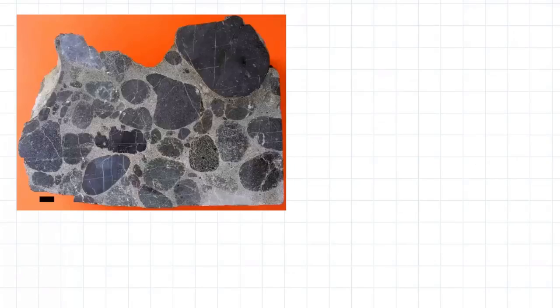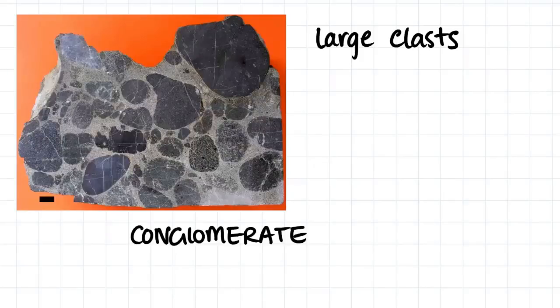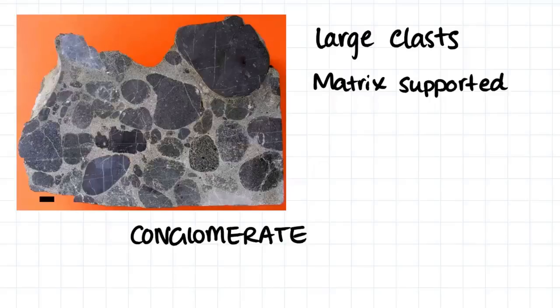Here we have another sample which has large clasts and is therefore clearly a conglomerate. However, it seems that the clasts are all swimming in a sea of matrix and therefore we would call it matrix supported. Therefore, this conglomerate is a paraconglomerate.